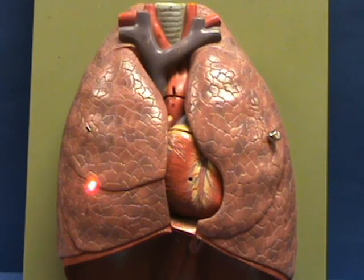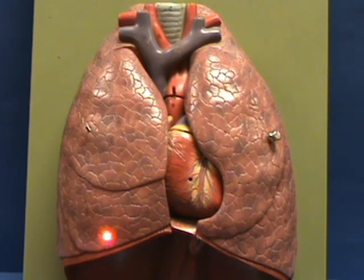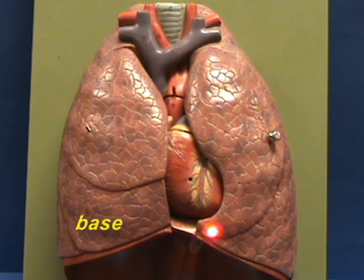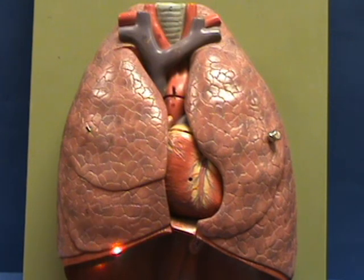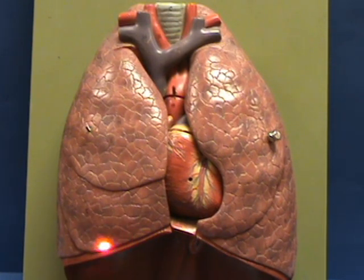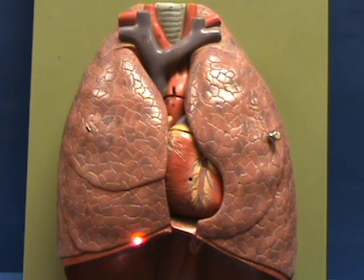Each lung is wide inferiorly at the base, and the base of each lung will rest on the diaphragm muscle. The surface which is against the diaphragm is the diaphragmatic surface.